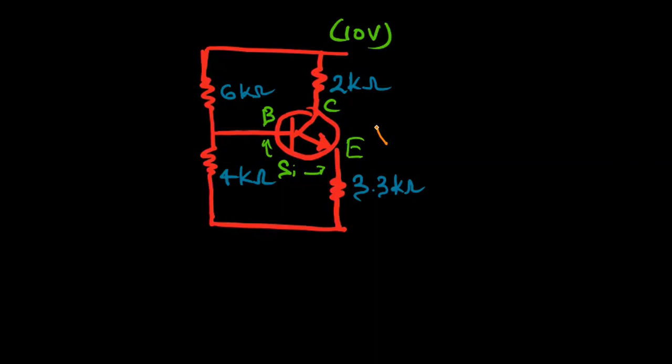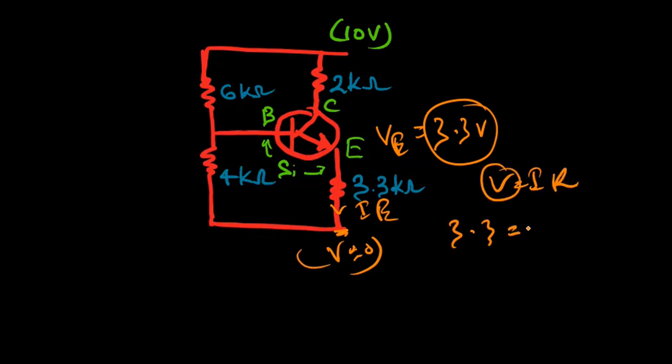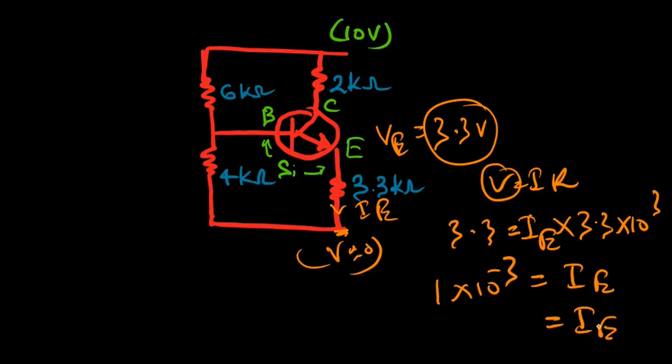Now we have VE value. Moving to IE current, VE we found is 3.3 volts and the potential here is 0. We can apply V equals IR. V is 3.3, so IE equals 3.3 divided by 3.3 kilo ohms, which equals 1 times 10 to the power minus 3, that is 1 milliampere.